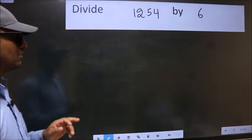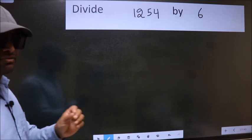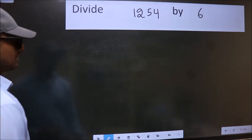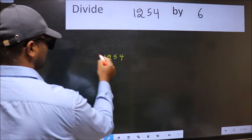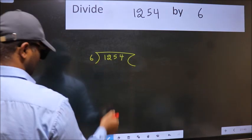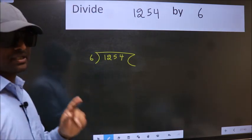Divide 1254 by 6. To do this division we should frame it in this way. 1254 here, 6 here. This is your step 1.